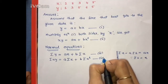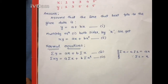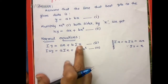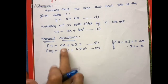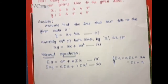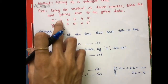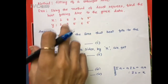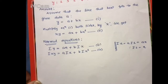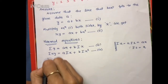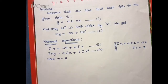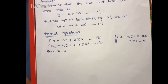So these two are our normal equations, numbered 3 and 4. You can do the numbering as per your convenience. Now we want to find all the required values: Σy, Σx, Σxy, Σx², and n. Here n is the number of observations. We have 5 data points given, therefore n = 5.